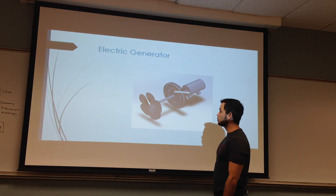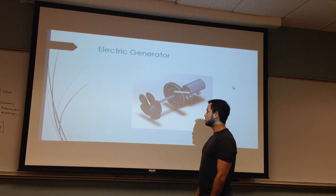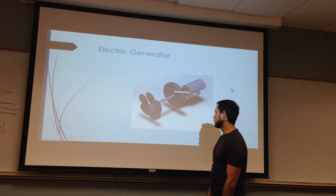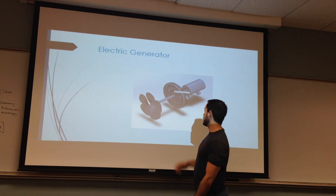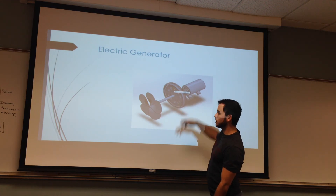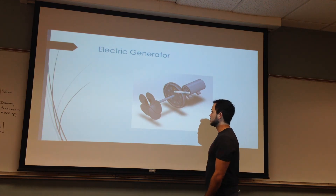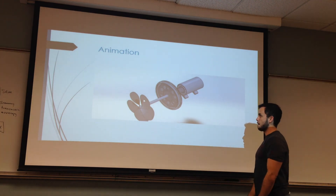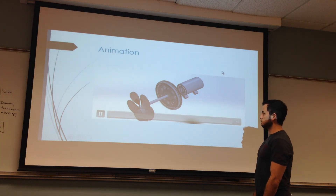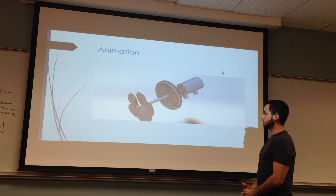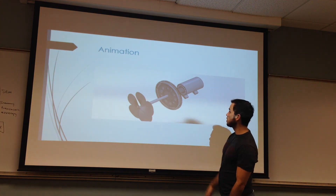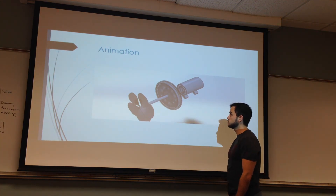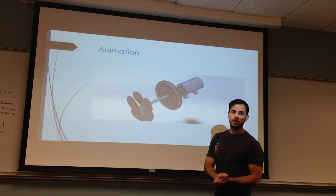This is our application — we used it for an electric generator. Wind can rotate the fan and create energy, going up through the gear set to create energy in the electric generator. As you can see, the fan is rotating and the gears are working properly to create energy. Thank you very much, that was our presentation.